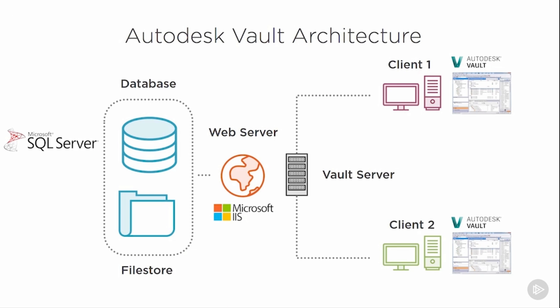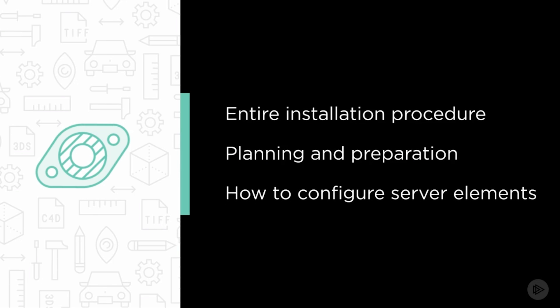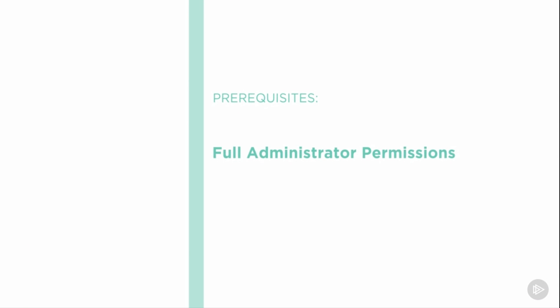It's a high-end data management solution which houses the most important asset of your company — your digital design data. It's so essential that it indeed warrants its own dedicated course on Pluralsight. In this course, we're going to be looking through the entire installation procedure for Vault Professional. We'll cover the planning and preparation required prior to the installation, along with how to configure the various server elements to best practice guidelines. You'll need full administrative permissions and unrestricted physical or remote access to the server, along with access to the software installation media and licenses. A full detailed list of that software will be given at the beginning of the first course module. Now let's begin on making sure you're suitably equipped with the knowledge and insight required to deliver a best practice Vault Professional installation.